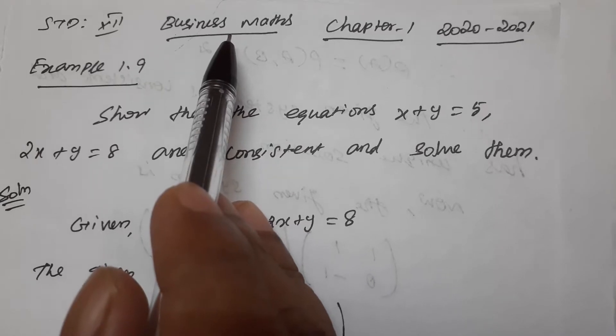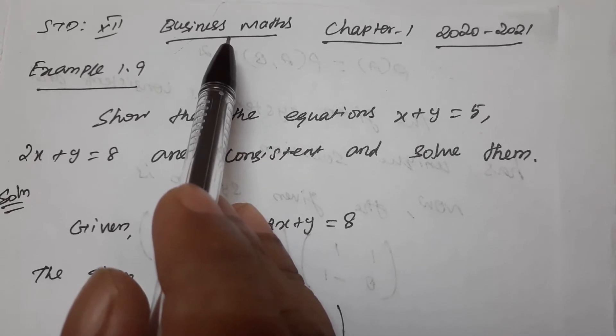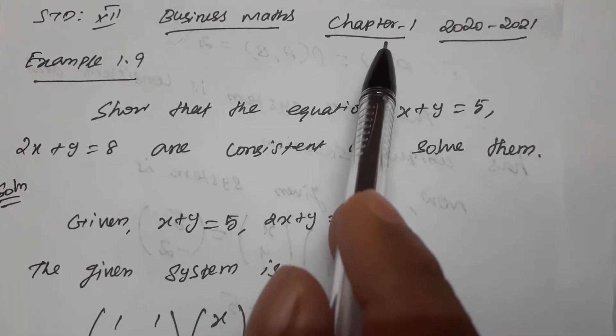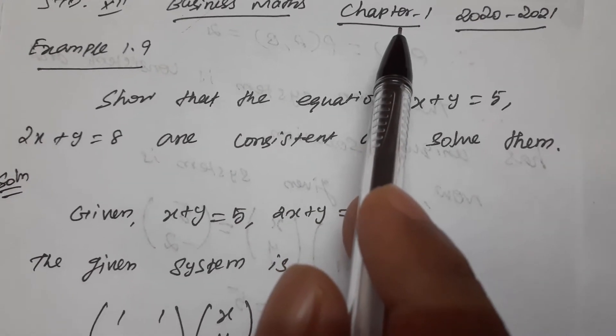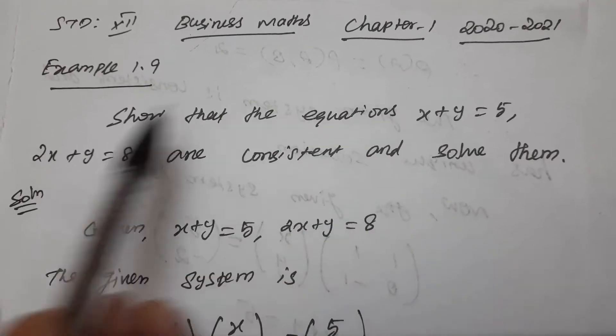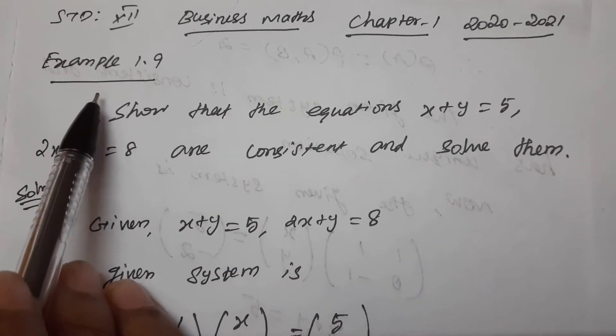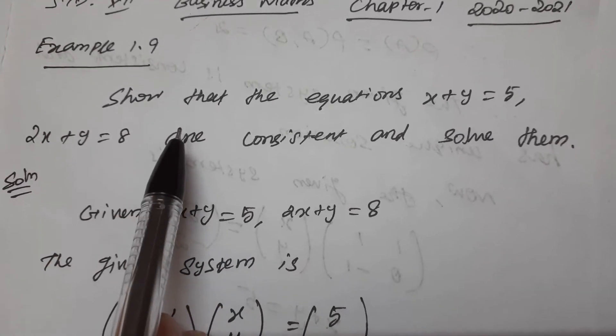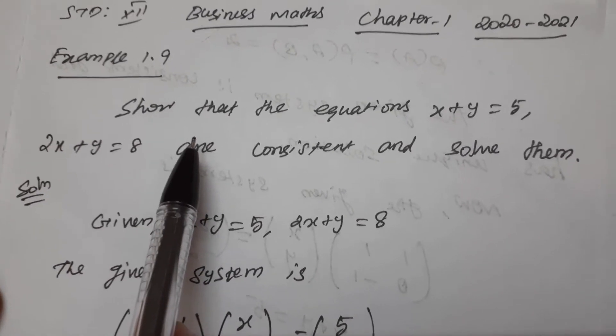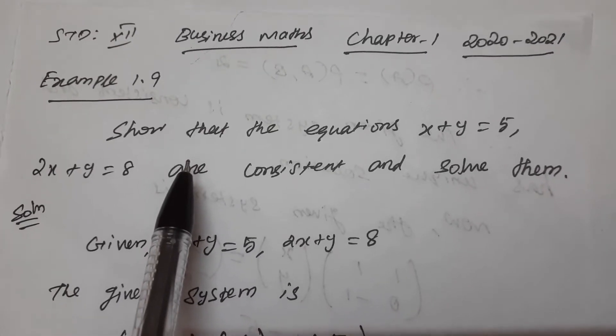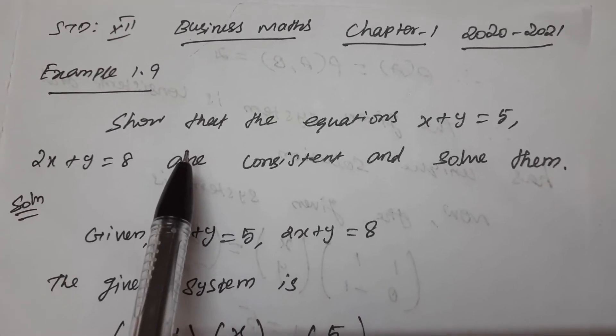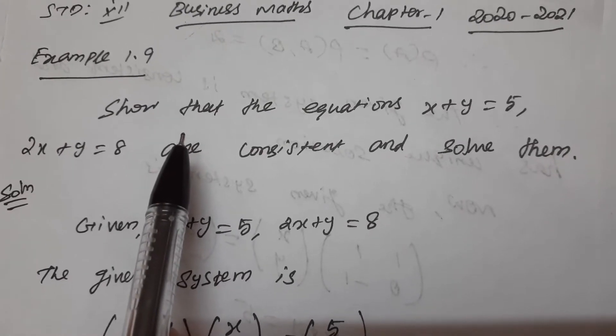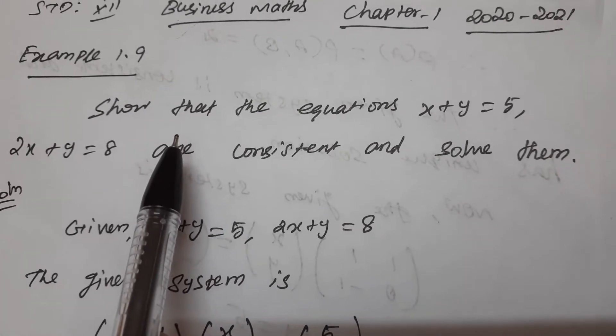Hi students, 12th standard business math chapter 1. We're going to look at Example 1.9. In our last classes we learned to find the rank of a matrix, both 2x2 order matrices and 3x3 order matrices.